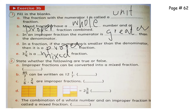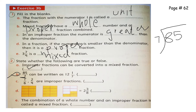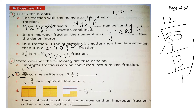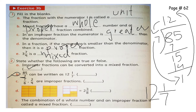Question 2 is true or false. First: improper fractions can be converted into mixed fractions — yes, this is true. We convert by division, for example 85 by 7 can be converted using long division. So the answer is true.